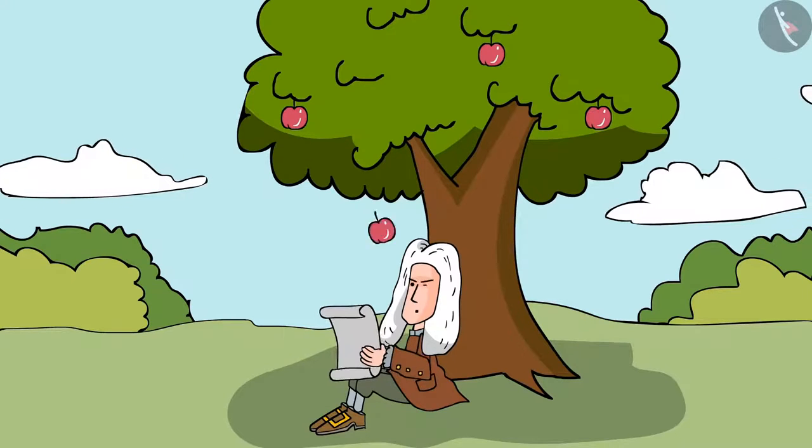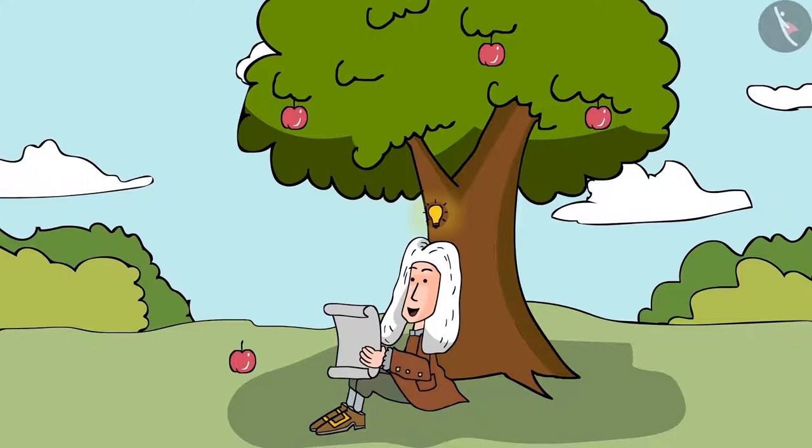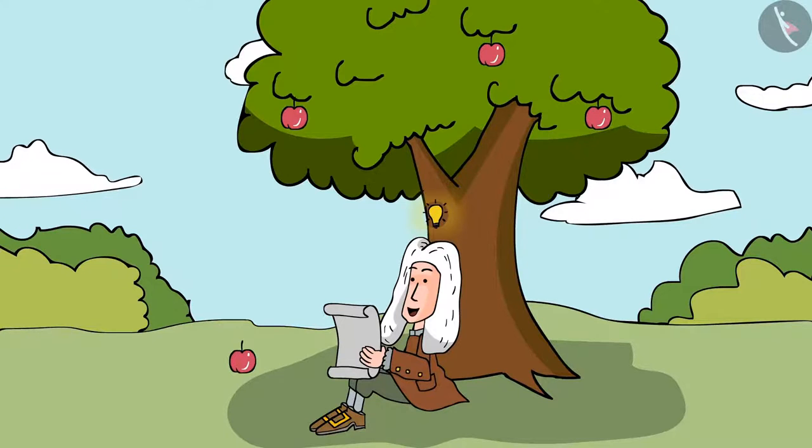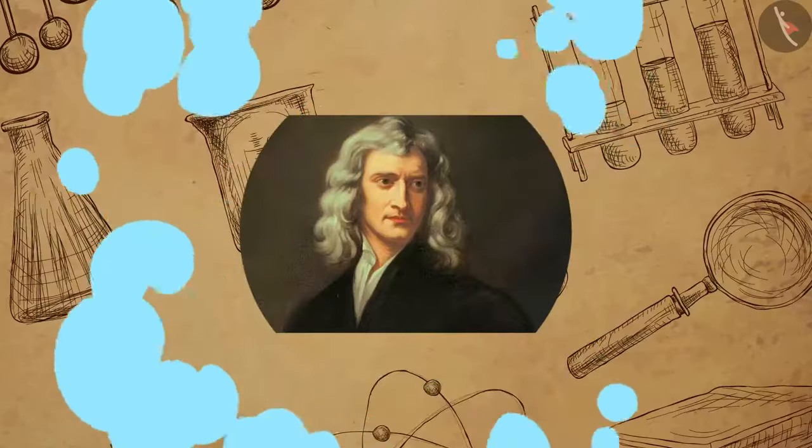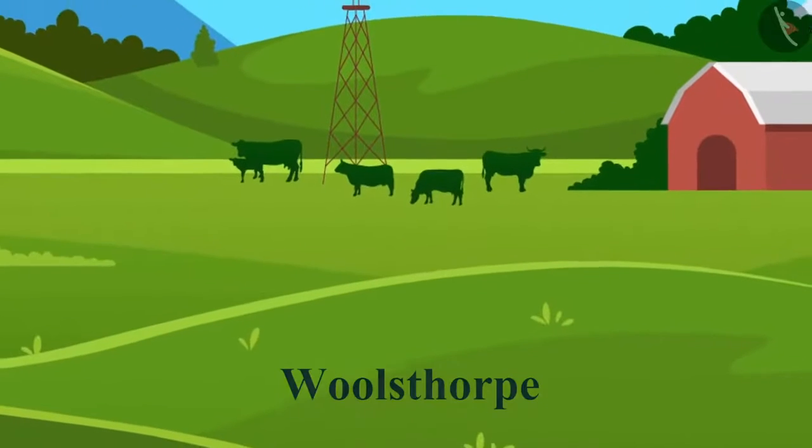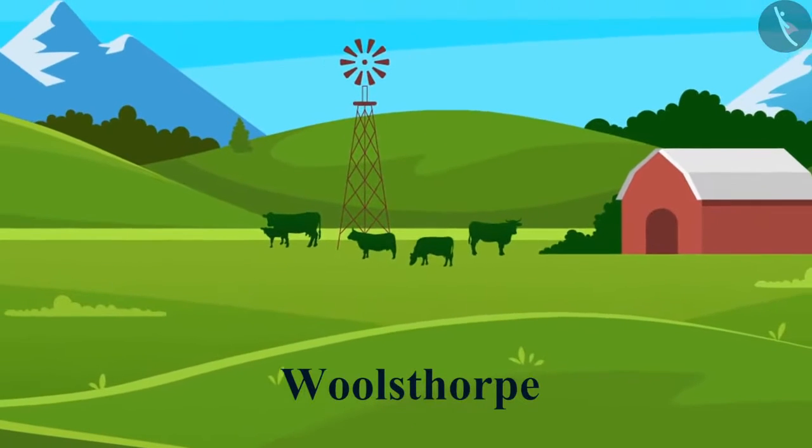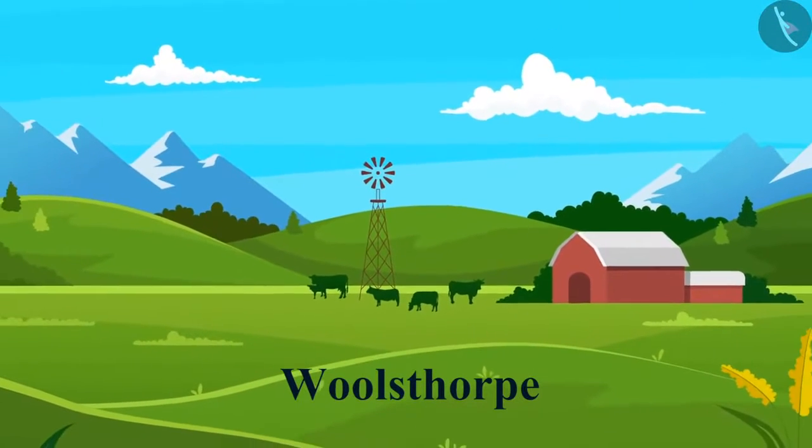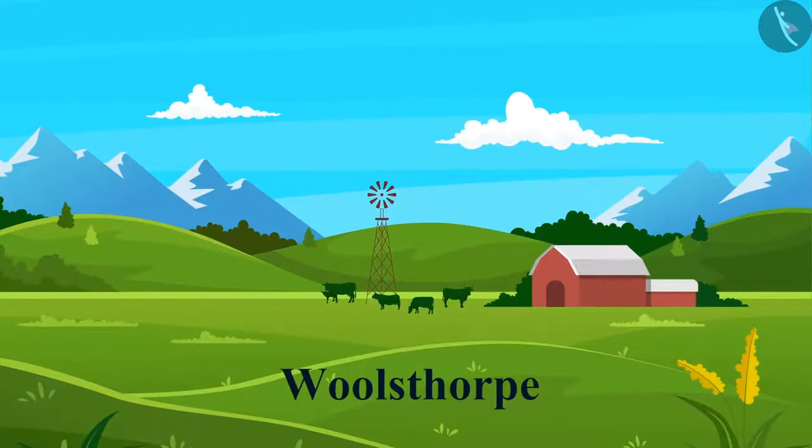Earlier, we learned how Isaac Newton discovered the laws of gravity. Let's now know a bit more about him. Sir Isaac Newton was born in Woolsthorpe near Grantham, England. He was born in a poor farming family, but he was not very good at farming.